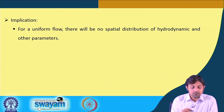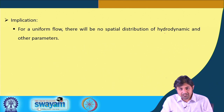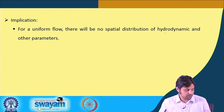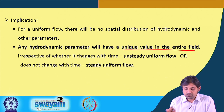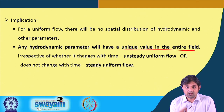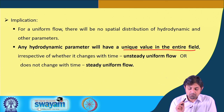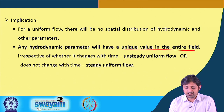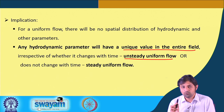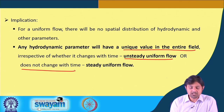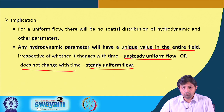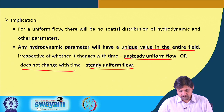For uniform flow, there is no spatial distribution of hydrodynamic parameters, and any hydrodynamic parameter has a unique value in the entire field regardless of whether it changes with time. Combining steady/unsteady with uniform/non-uniform: steady uniform flow means properties change neither with space nor time; unsteady uniform flow means properties change with time but not space.